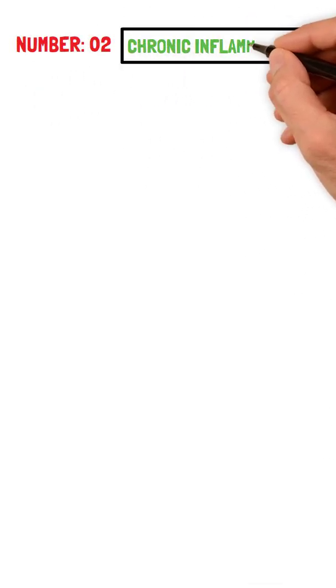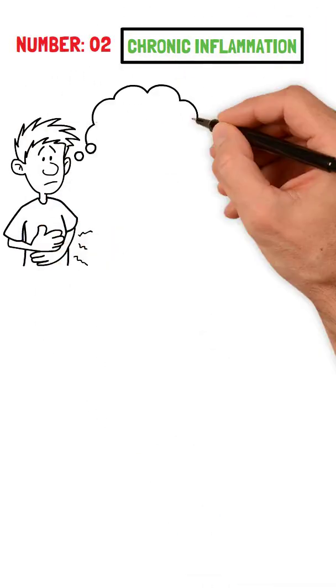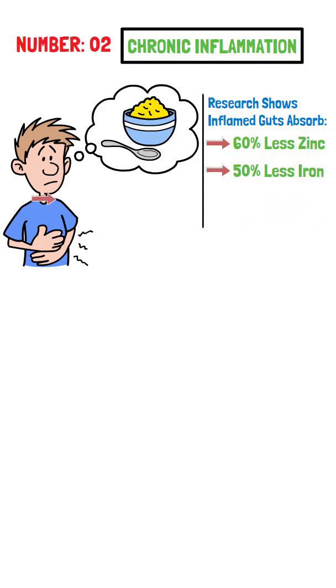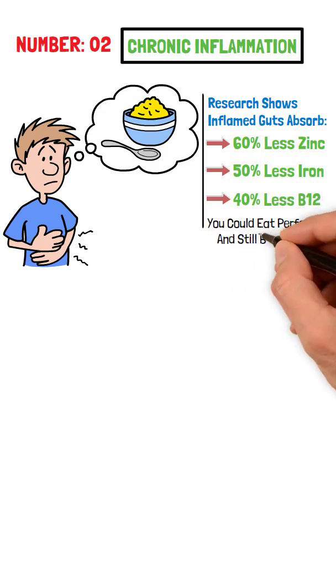Number 2: Chronic Inflammation. Inflammation shuts down nutrient transporters. Research shows inflamed guts absorb 60% less zinc, 50% less iron, 40% less B12. You could eat perfectly and still be deficient.